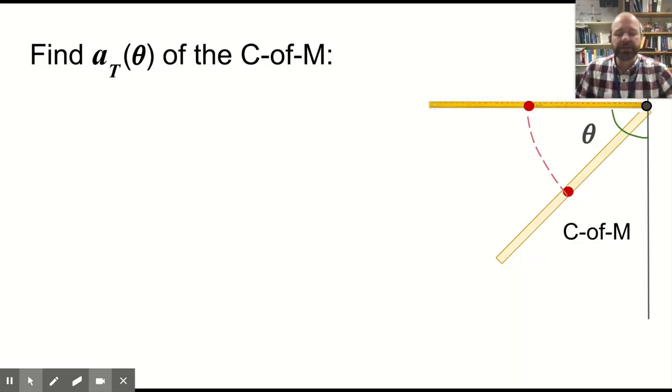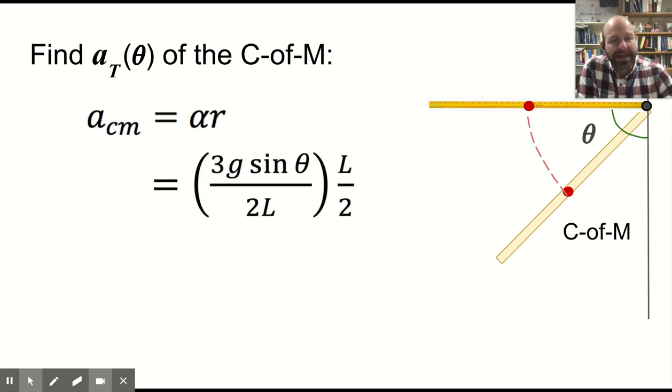What about the translational or tangential acceleration of the center of mass? Well, we use the same exact thing. A center of mass is equal to alpha R, but the R this time is half the length of the meter stick. So that's 3 quarters g sine theta. And so what we have then is that at the beginning, the middle, the midpoint, is accelerating slower than g, and the tip is accelerating faster than g.